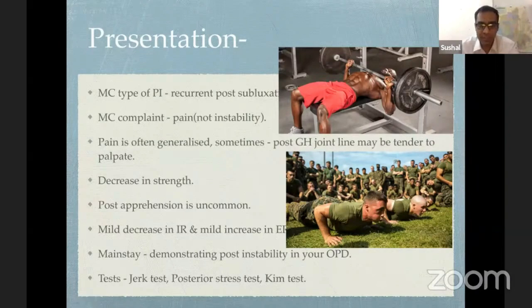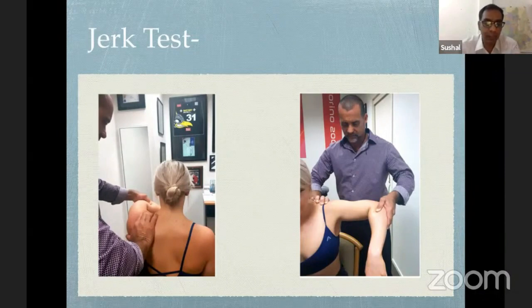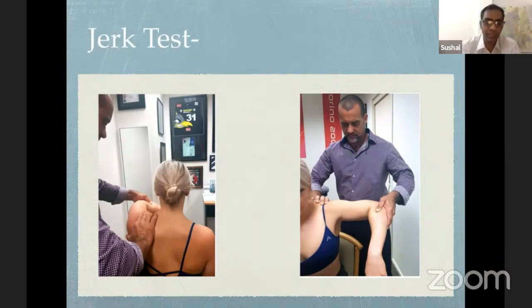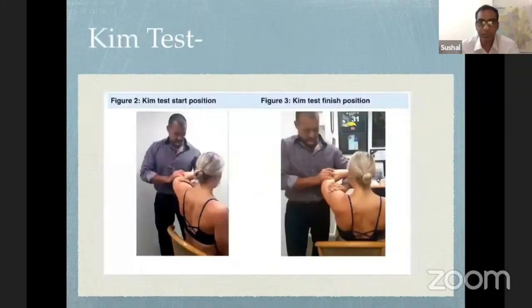MRI acts as an adjunct once you clinically suspect posterior instability. The common tests are the Jerk test, Posterior stress test, and the Kim test. The Jerk test is performed with the examiner standing next to the affected shoulder — the elbow is grasped in one hand and the other holds the scapular spine and distal clavicle. With the arm in flexion and internal rotation, the flexed elbow is pushed posteriorly while the posterior scapula is pushed anteriorly, applying a posterior axial force. A sudden jerk with pain — similar to the relocation test in anterior instability — indicates the subluxated humeral head relocating into the glenoid: a positive Jerk test.